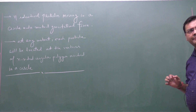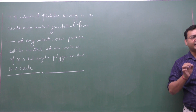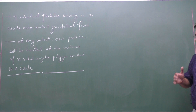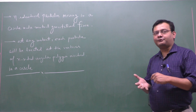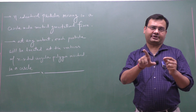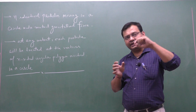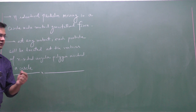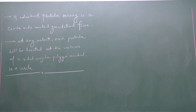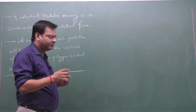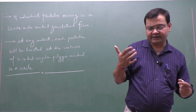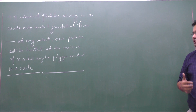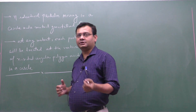We follow the same approach: find the net gravitational force on any one particle, and the net force acting towards the center provides the centripetal force. By symmetry, in such cases the net gravitational force on any one particle will be directed towards the center of the circle, with no tangential component, so the motion of each particle is uniform circular motion and we can apply T = 2πR/V.